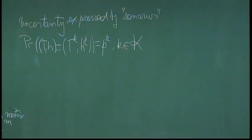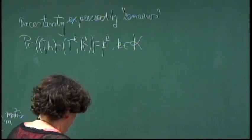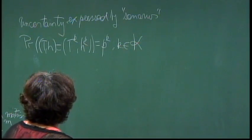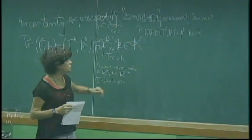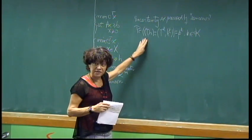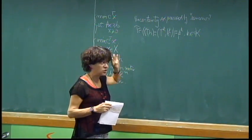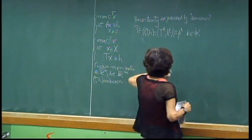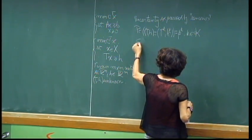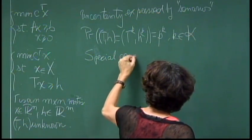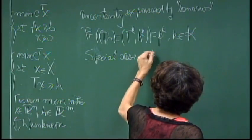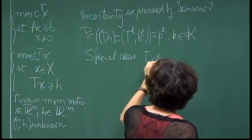We assume that the probability that (T, H) becomes (T_k, H_k) is p_k, which is known, for k belonging to some set capital K that can be finite or infinite if we consider the continuous case. Usually in computations we will have K as a finite number of scenarios. We will consider today an even simpler case where the technology matrix is deterministic.